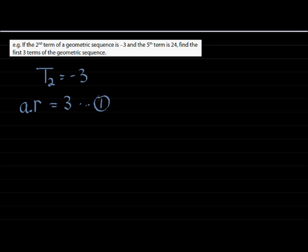They say the fifth term equals 24. T5 equals 24. That means I took my first term and multiplied it with a constant ratio four times to get the fifth term, and that answer is 24. Let's call this the second equation.